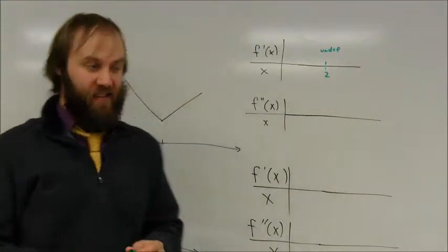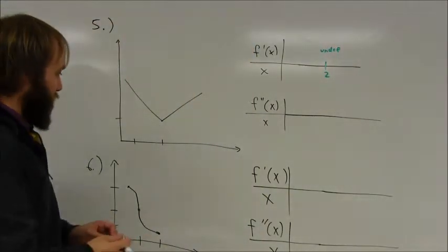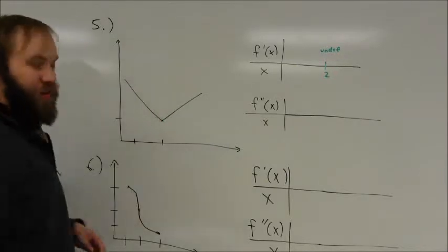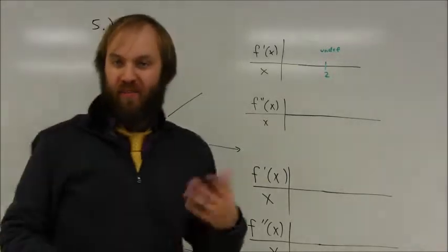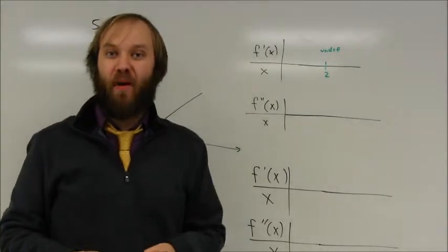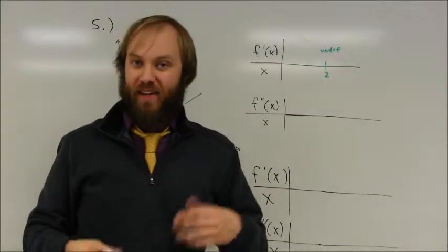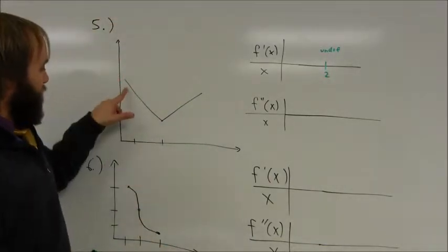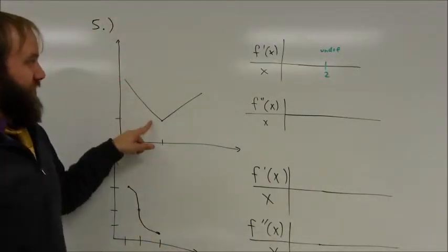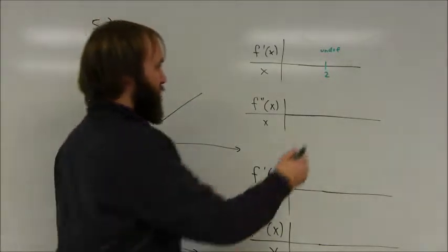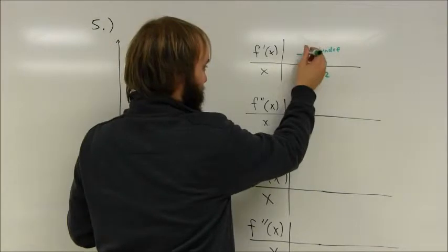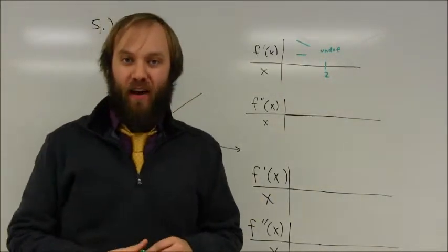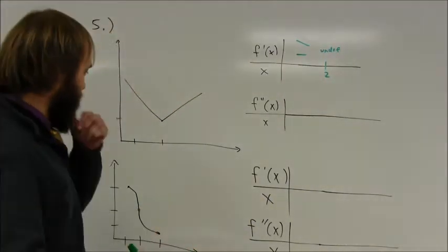The slope of the tangent line is undefined there. There's no set derivative value you can have at a cusp or corner because you can have different possible slopes against it. On this side, notice up to x=2 it's a negative slope — so I say it's negative, and a lot of times you model that by drawing a downward sloping line. On the other side it's increasing, so it's a positive slope with an upward sloping line.